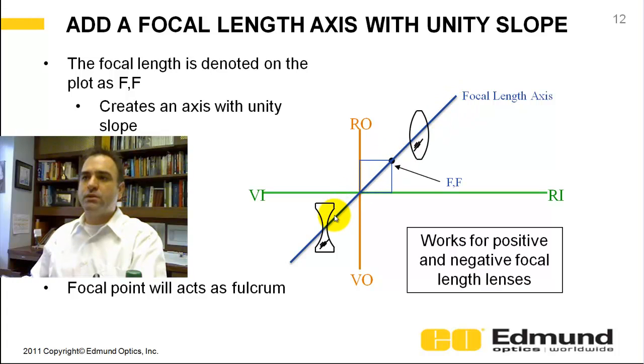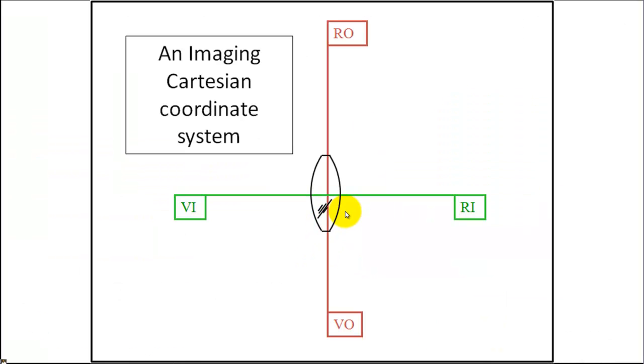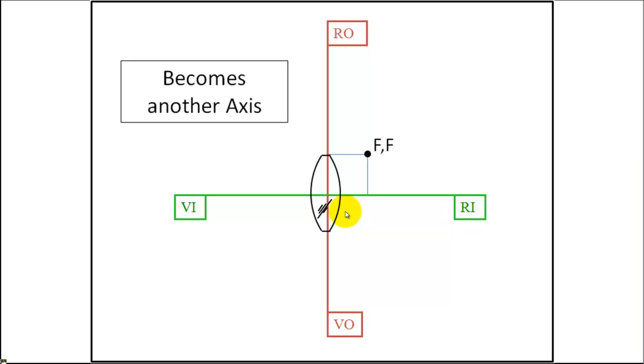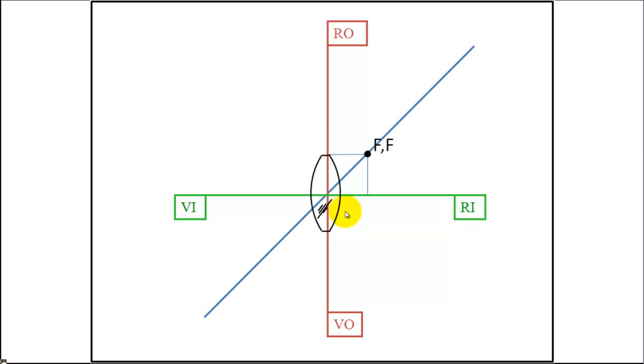This axis works for positive and negative, for diverging and converging focal lengths. Here's another demonstration. We rotate, get a Cartesian coordinate system. Insert a point at your focal length, comma, focal length. Create an axis at this point with a unity slope. And you can see the focal length is going to vary. And again, I'm making the radii thinner and fatter to show the focal length is increasing and decreasing accordingly.